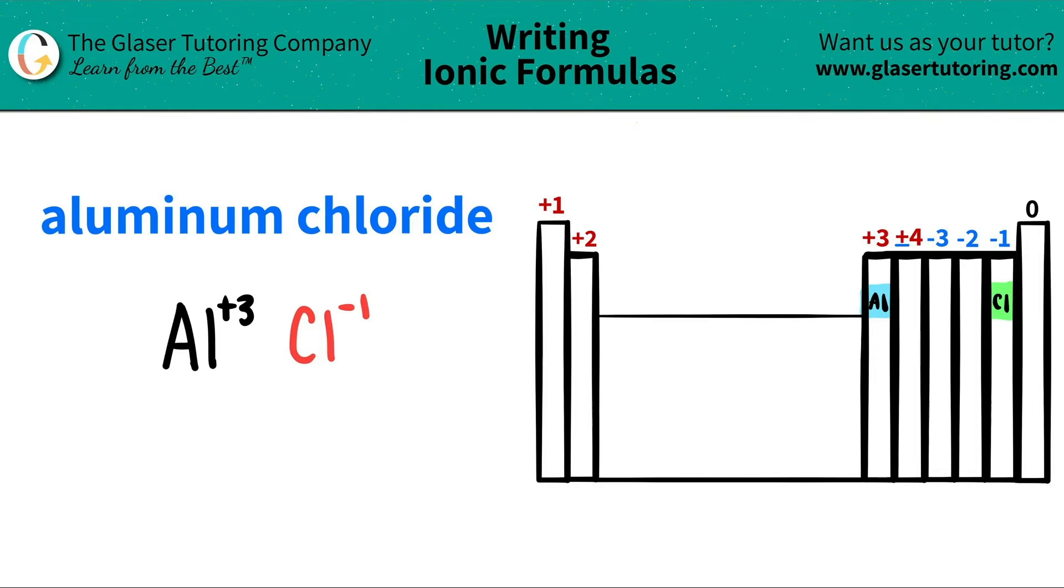Now I have both components. So all we got to do is just take these charges and we crisscross them to just say how many of each we need. This plus three crisscrosses down telling me that I need three chlorines. And this negative one crisscrosses down telling me that I need one aluminum. When you do this crisscrossing, you could basically scribble out the charges. They're just used for that little trick. And we're focusing on the subscripts data at the bottom.